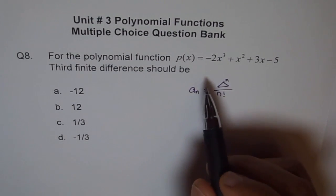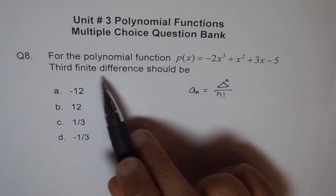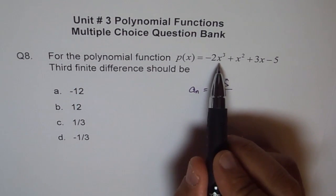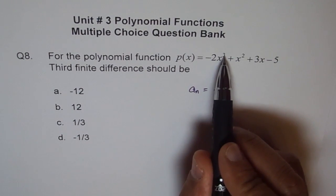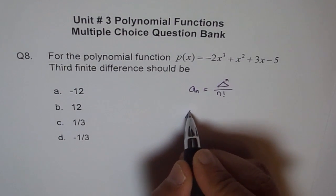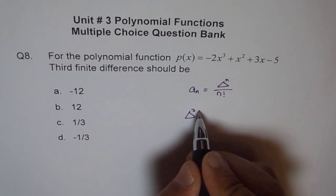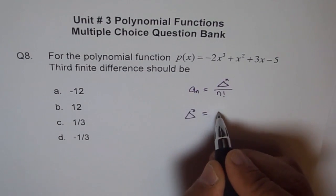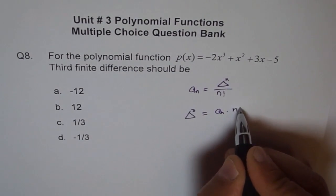Now here we need to find the third finite difference. Since this polynomial is of degree 3, its third finite difference will be constant. So we can say from here, our third finite difference will be constant, which is equal to an times n factorial.